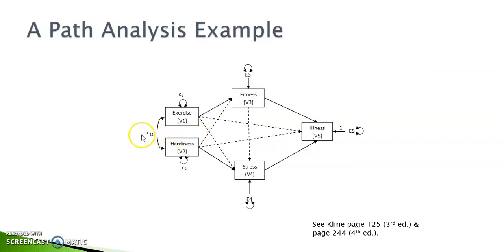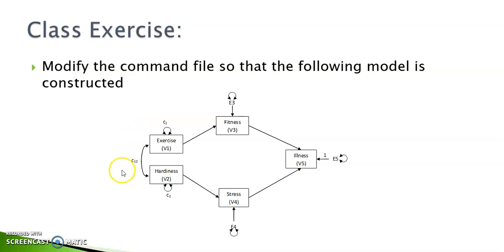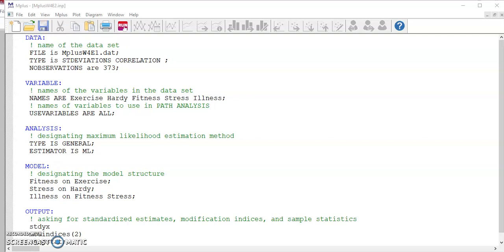In the previous video, I prepared a data file and a command file to complete this path model in Mplus. So for this model, I'm going to simply modify the previous command file to reflect the structural relationships in this diagram. You do not have to change the data file because it's the same one. In the Mplus command file, the only place you need to modify is the model specification in the model block. Make sure you have the structural relationships in the diagram correctly captured by your statement. Remember to save the changes and run the analysis.